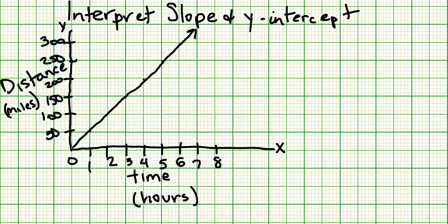In our graph, the y-intercept is zero. When you interpret the slope and y-intercept, you have to pay close attention to what the axes are representing. On this graph, the x-axis stands for time in hours, and the y-axis is labeled distance in miles, representing how distance changes over time.